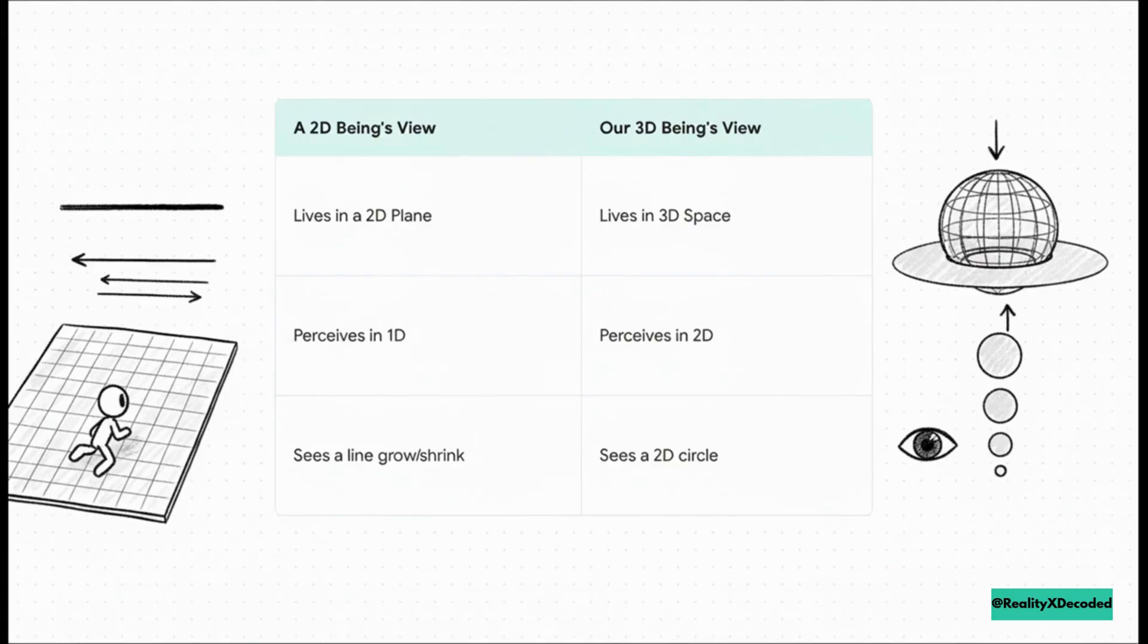He'd see a point just appear out of nowhere, become a line that grows to a maximum length, and then shrink back to a point before vanishing completely. He would have absolutely no concept of the full shape.